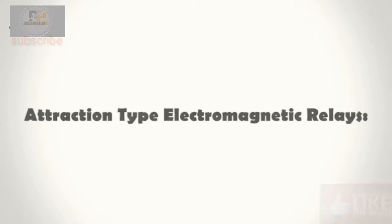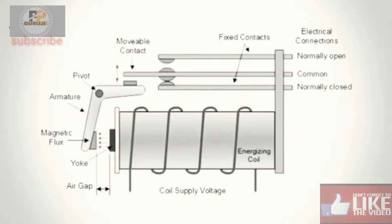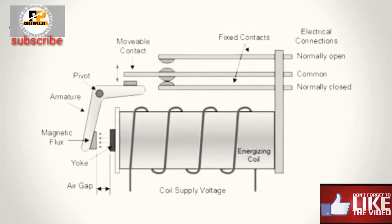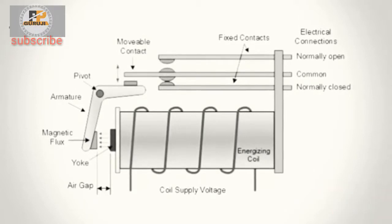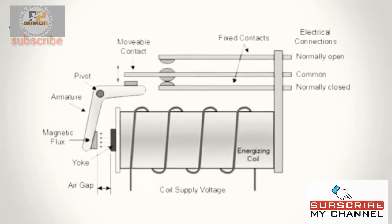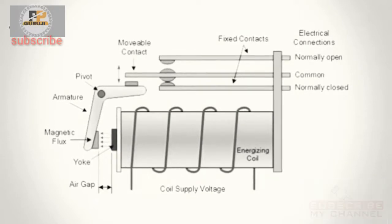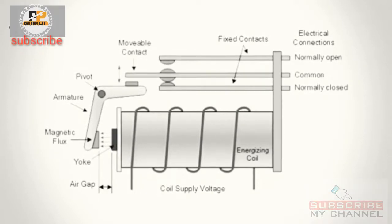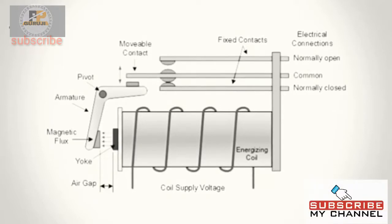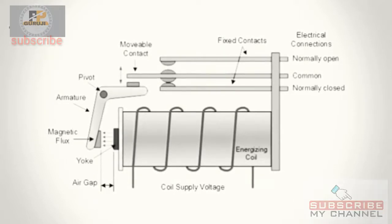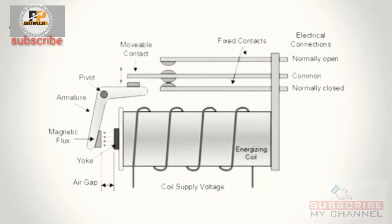Attraction type electromagnetic relays. These relays can work with both AC and DC supply and attract a metal bar or a piece of metal when power is supplied to the coil. This can be a plunger being drawn towards the solenoid or an armature being attracted towards the poles of an electromagnet as shown in the figure. These relays don't have any time delays, so they are used for instantaneous operation.